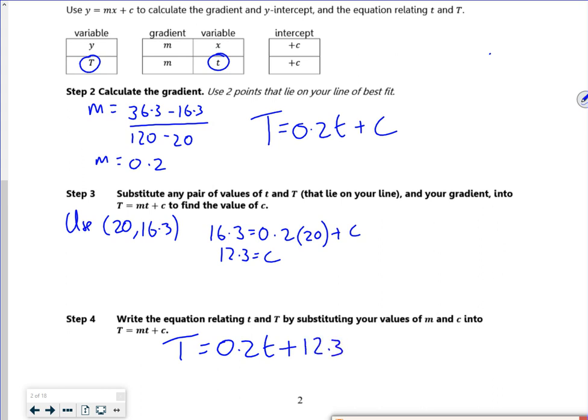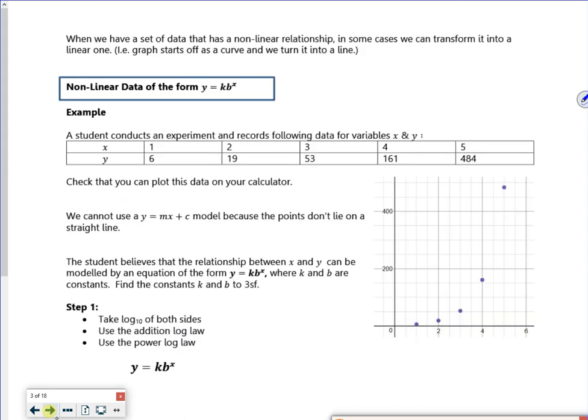So if I use 20, 16.3, which is the first point. So I've got 16.3 is 0.2 lots of 20 plus c. Take the 4 away gives me 12.3 equals c. So my equation is the temperature is 0.2 times by the time plus 12.3. So that's that one done.